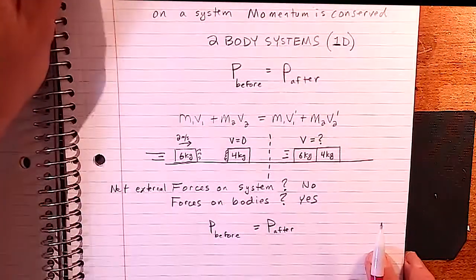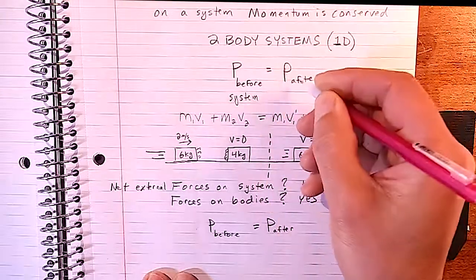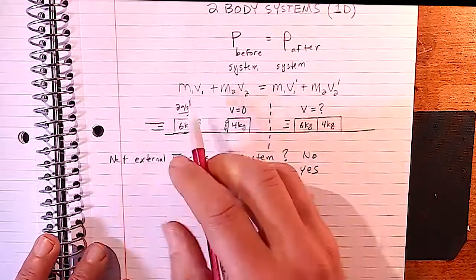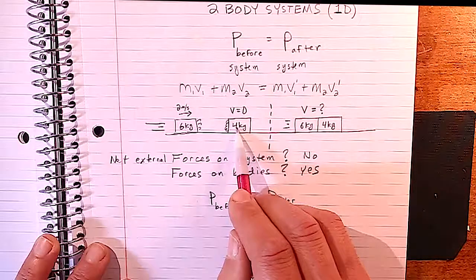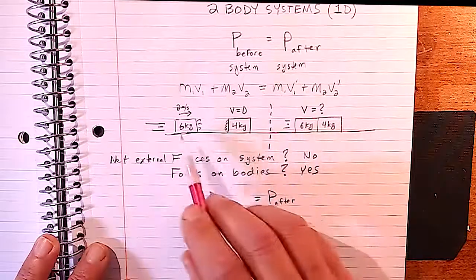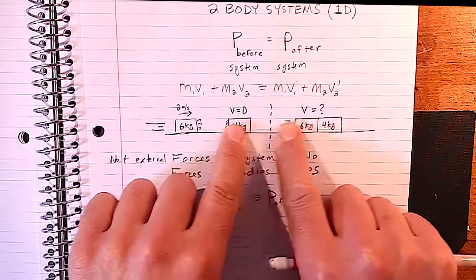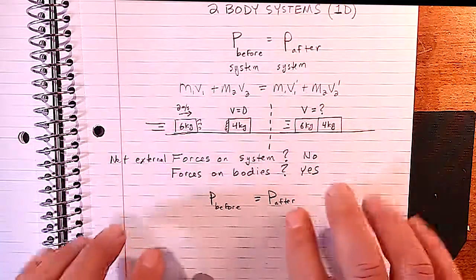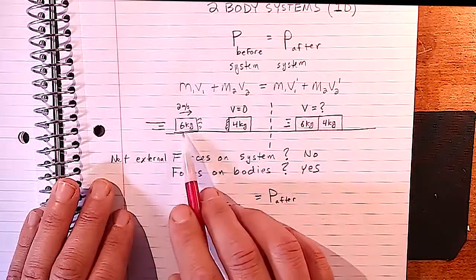The momentum before the system equals the momentum after the system — not that the individual parts have to be equal. We write this as m1v1 + m2v2 = m1v1′ + m2v2′. This also applies to explosions, such as two blocks with a spring flying apart, a rifle shooting a bullet, or any case where the bullet recoils.